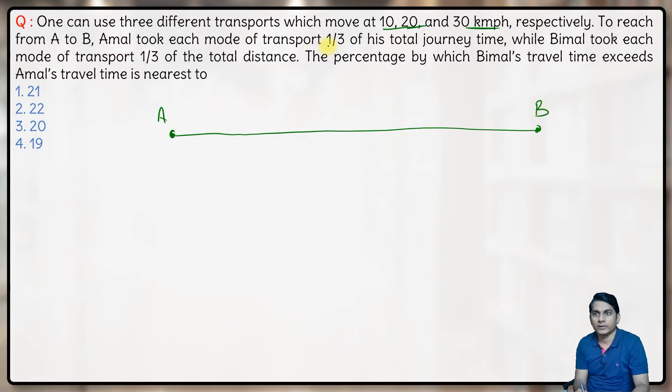Amal took each mode of transport for one-third of his total journey time. So Amal is taking each transport for one-third of the total time.